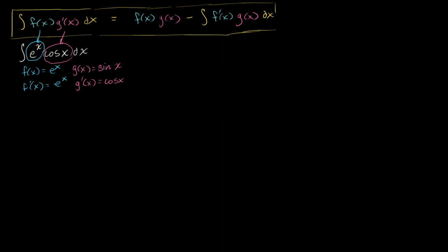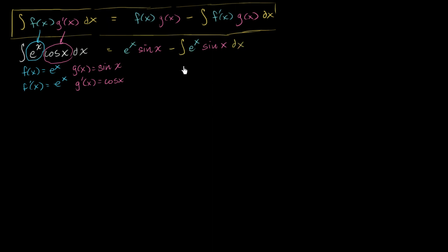Now let's apply integration by parts. This integral equals f(x)·g(x) minus the antiderivative of f'(x)·g(x), which gives us eˣ·sin(x) minus the antiderivative of eˣ·sin(x) dx. It doesn't look like we've made a lot of progress — we now have an indefinite integral that involves sin(x), so let's see if we can solve that one separately.